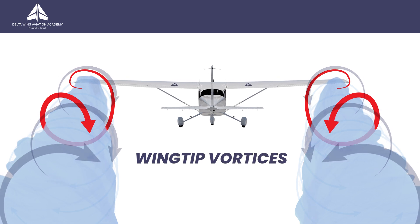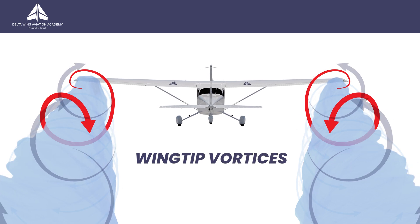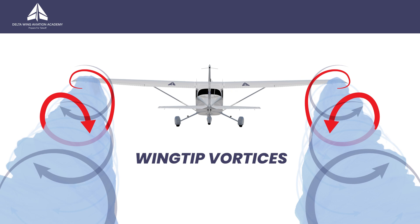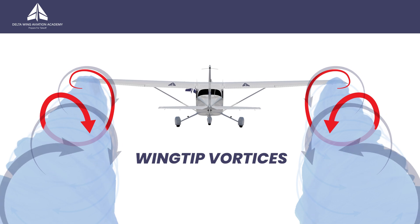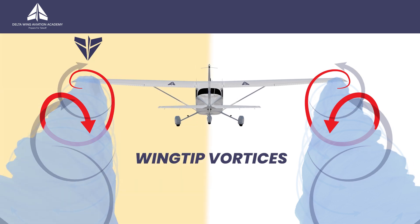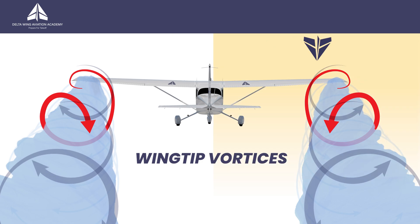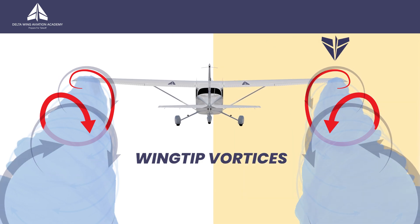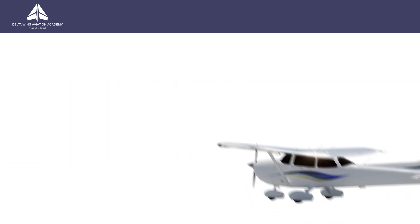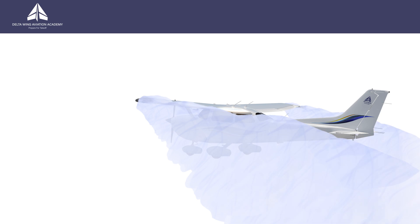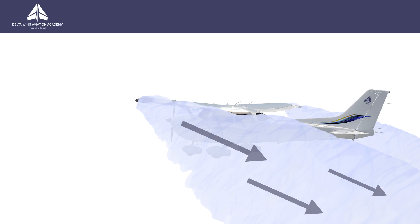Wingtip vortices behave in a predictable manner. First and foremost, they rotate down and out — the left vortex rotates clockwise and the right vortex rotates counterclockwise, seen from behind. Second, wingtip vortices descend behind the aircraft. This is because of the reaction of the airflow against the wing — the wing is pushed up and the air is pushed down as a result of the interaction that produces lift.